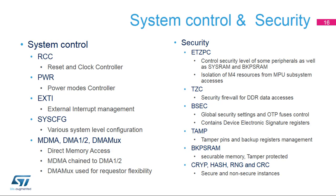Various blocks manage the transversal system control. The major ones are the Reset and Clock Controller (RCC), the Power Management (PWR) which controls system power modes, and security which is controlled by TrustZone inside the Cortex-A7 core, as well as various additional blocks. The Enhanced TrustZone Protection Controller (ETZPC) defines which peripherals are secure or not, isolated or not. The TrustZone Address Space Controller for DDR (TZC) blocks unwarranted access to DDR data.